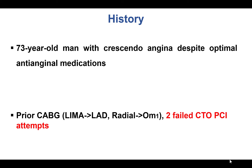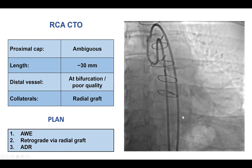The patient presented with angina despite optimal anti-anginal medications. He had a coronary bypass with LIMA-to-LAD and radial graft-to-obtuse marginal, and had a culprit lesion in the circumflex with two previous failed CTO-PCI attempts.